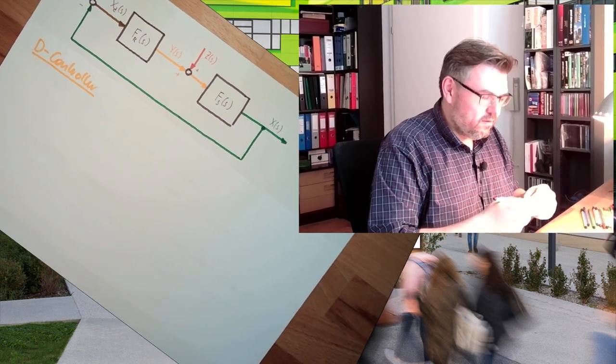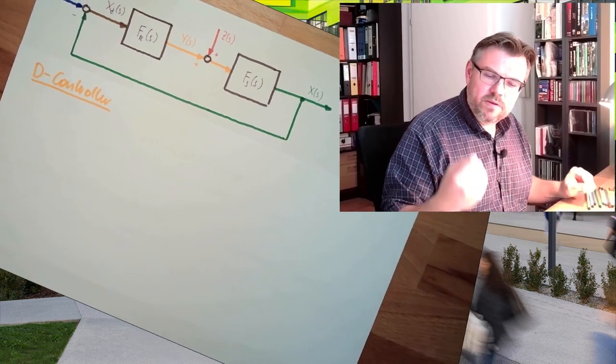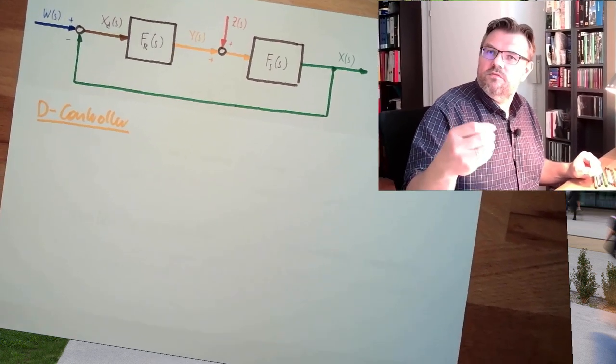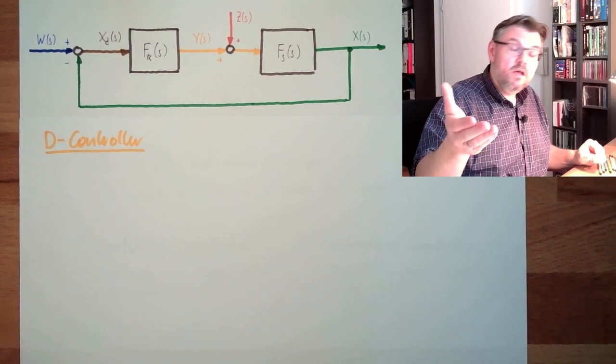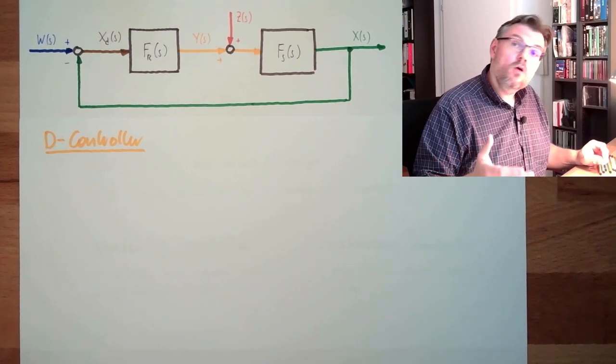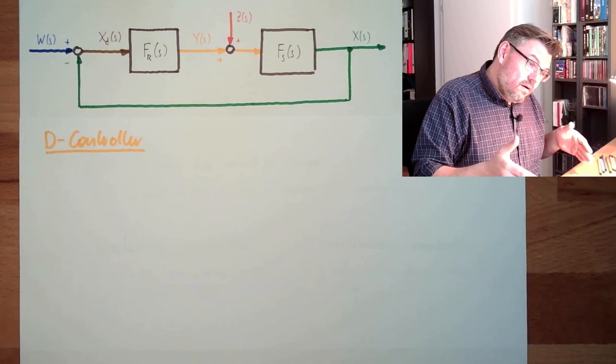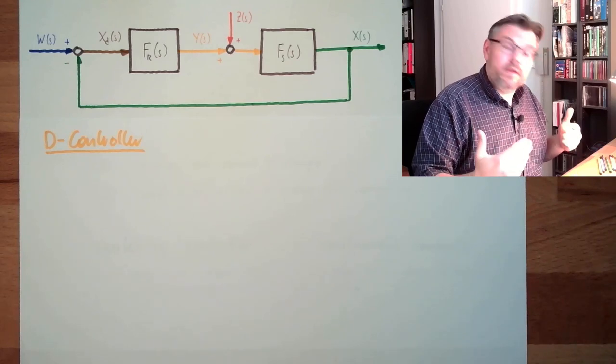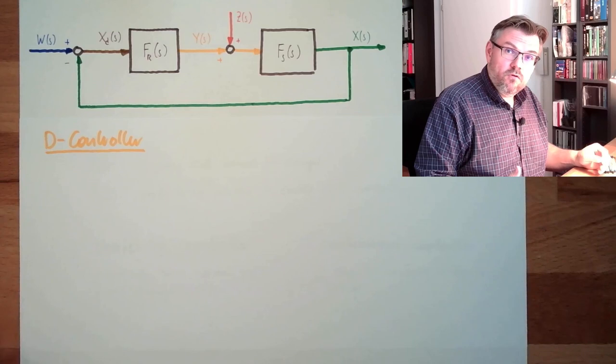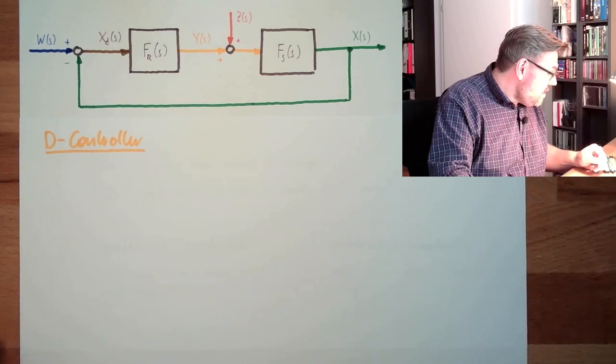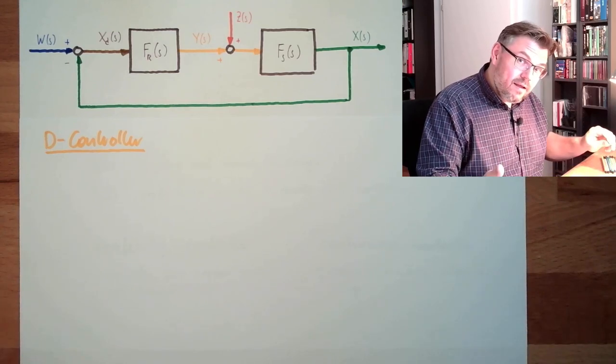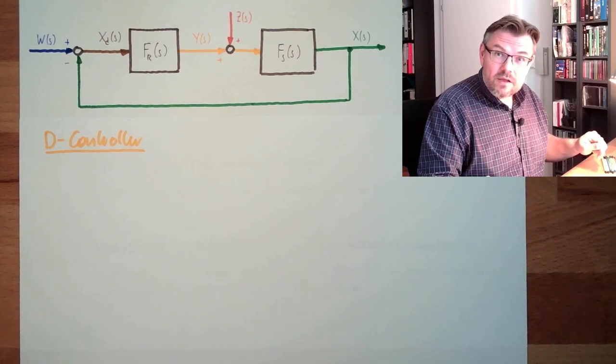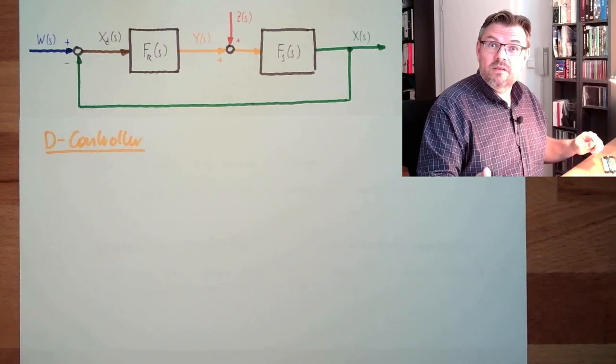The transfer function of a P-controller was the transfer function of a P-element. The transfer function of an I-controller was the transfer function of an integrating element. And the transfer function of a D-controller must then not be the transfer function of a D-element.